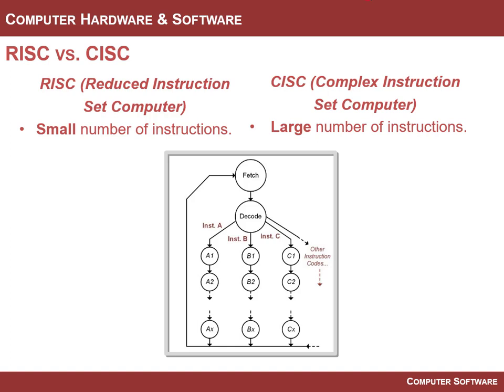If you look at computers, there are kind of two approaches to building a computer. One is where you build the CPU or control unit to have a lot of different instructions — so hundreds of instructions, each of which can perform a very complicated task, almost like one instruction for everything you could ever imagine. That's called a complex instruction set computer, or CISC — a large number of instructions.